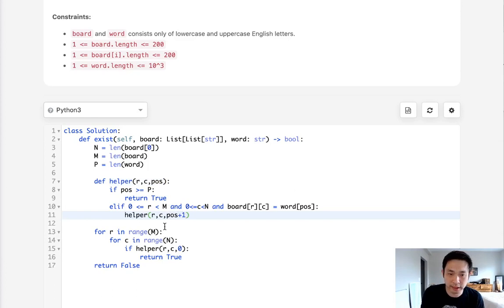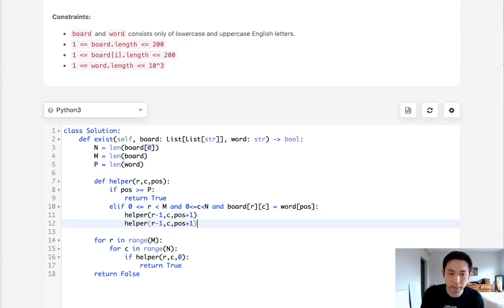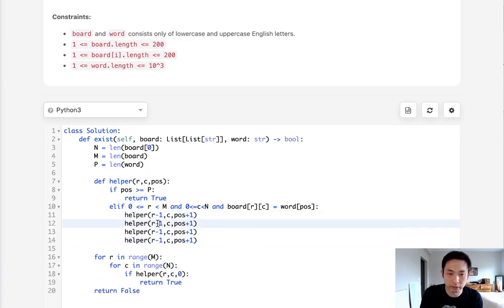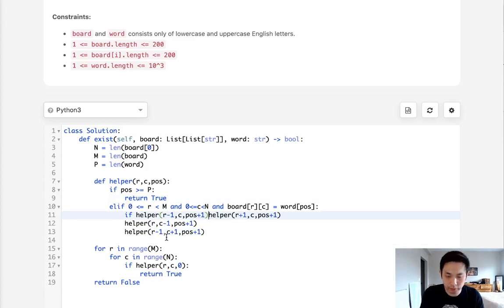Now we want to do this for the next position, and we also want to do it four times—up, down, left, right. So this is going to be up, down, this will be left, this will be right.